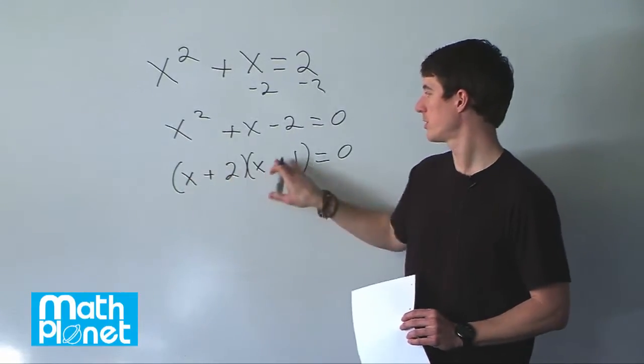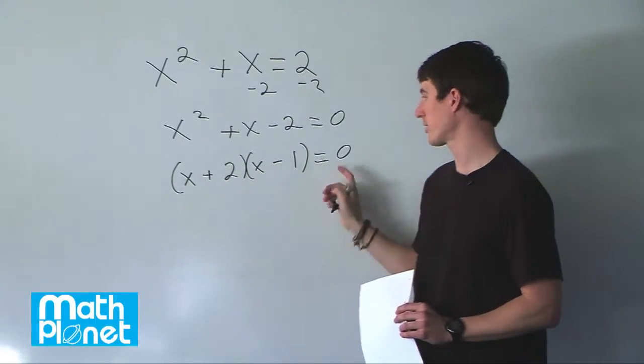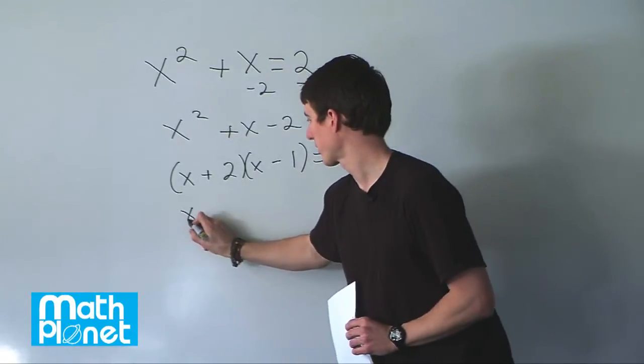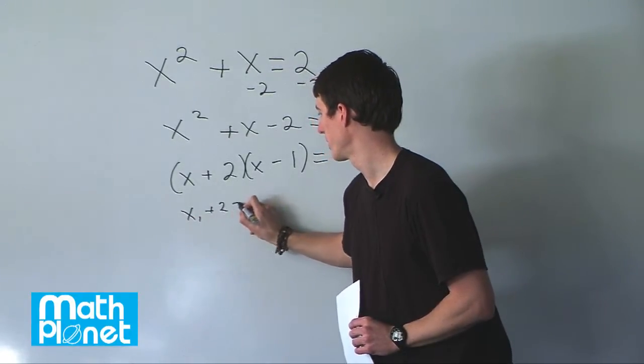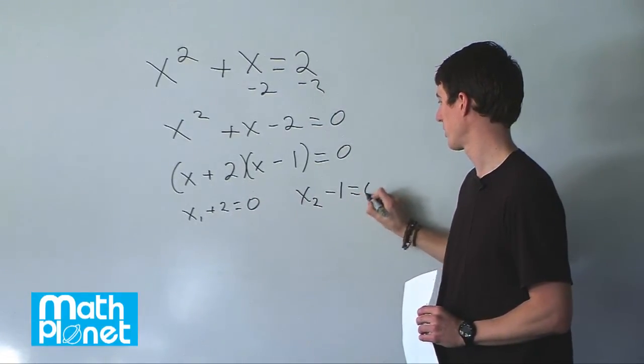What we have is two terms, two factors, and if we get a zero for either one of these, then we get a product of zero. In other words, x one plus two equals zero and x two minus one equals zero.